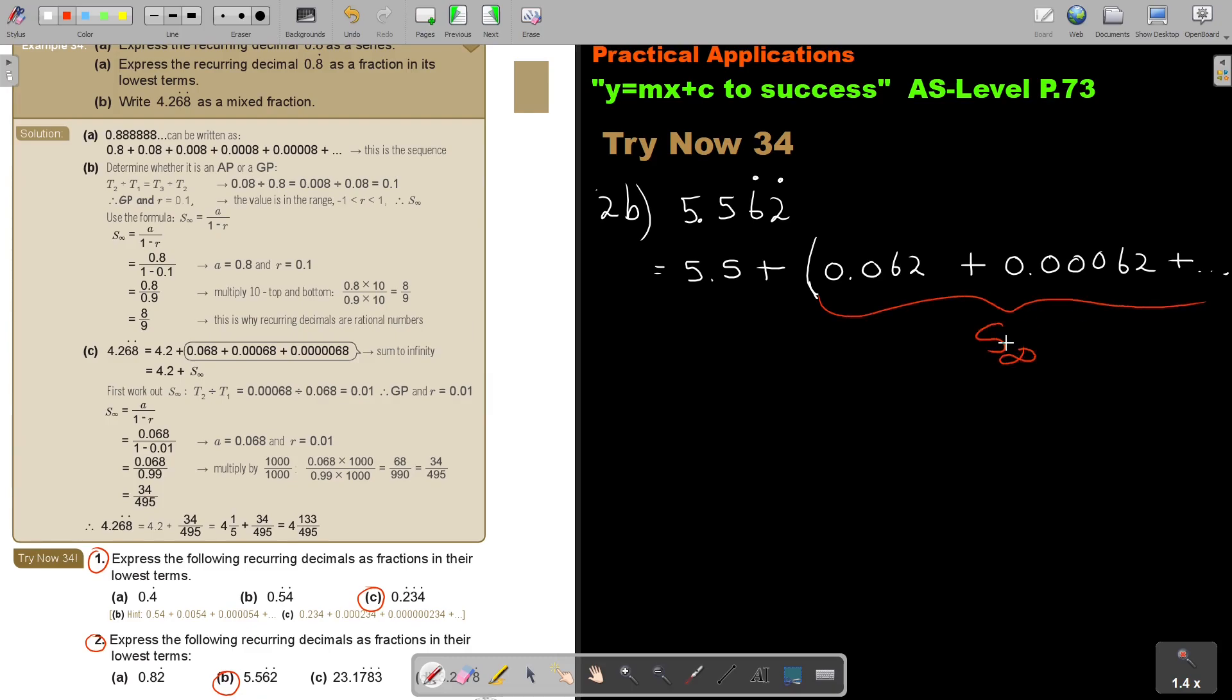If I look at this, the value of A is 0.062. The value of A is 0.062. And then the value of R is, this is term 1, this is term 2 because my sequence is 0.062. So it will be 0.00062 divided by 0.062. And my value of R in this case, let's just quickly see, is 0.01.